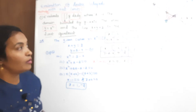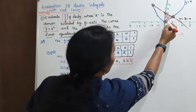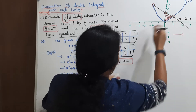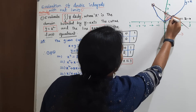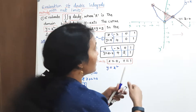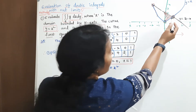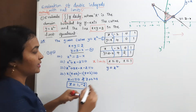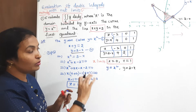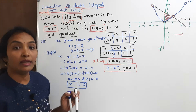For the y limits, see the graph carefully. What is the lower curve and what is the upper curve? The lower limit is the parabola, that is y equals x squared. The upper limit is the line, that is y equals 2 minus x. Without the correct limits, we are not able to solve the problem.